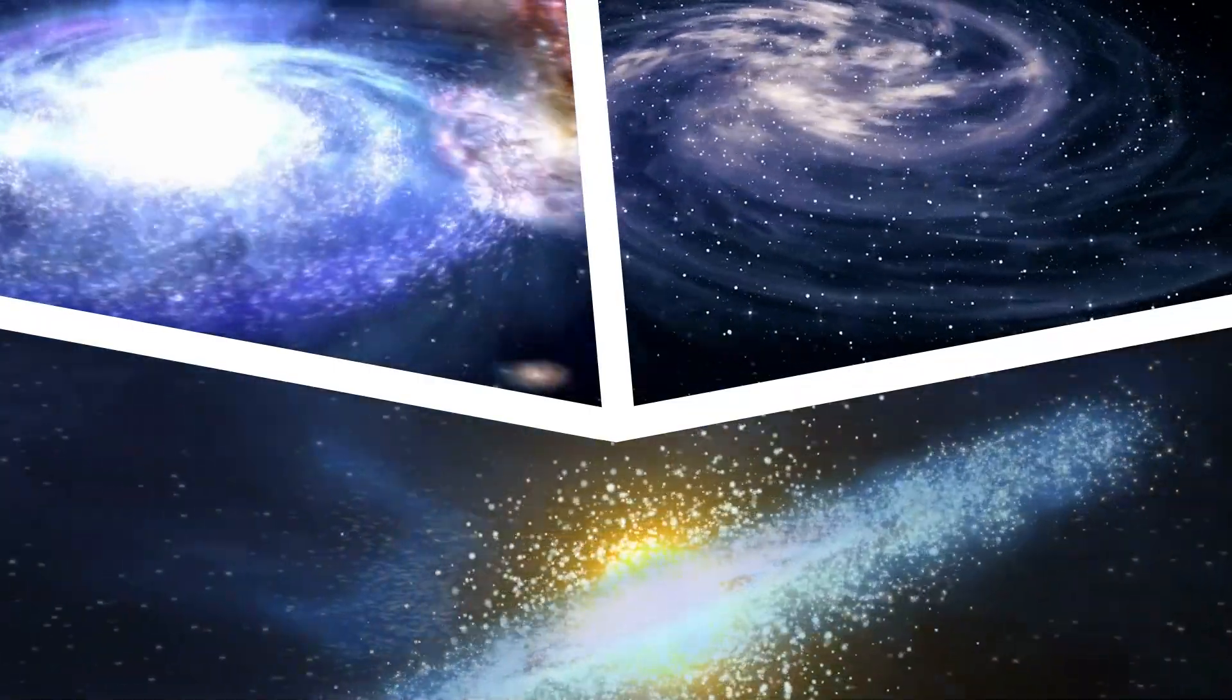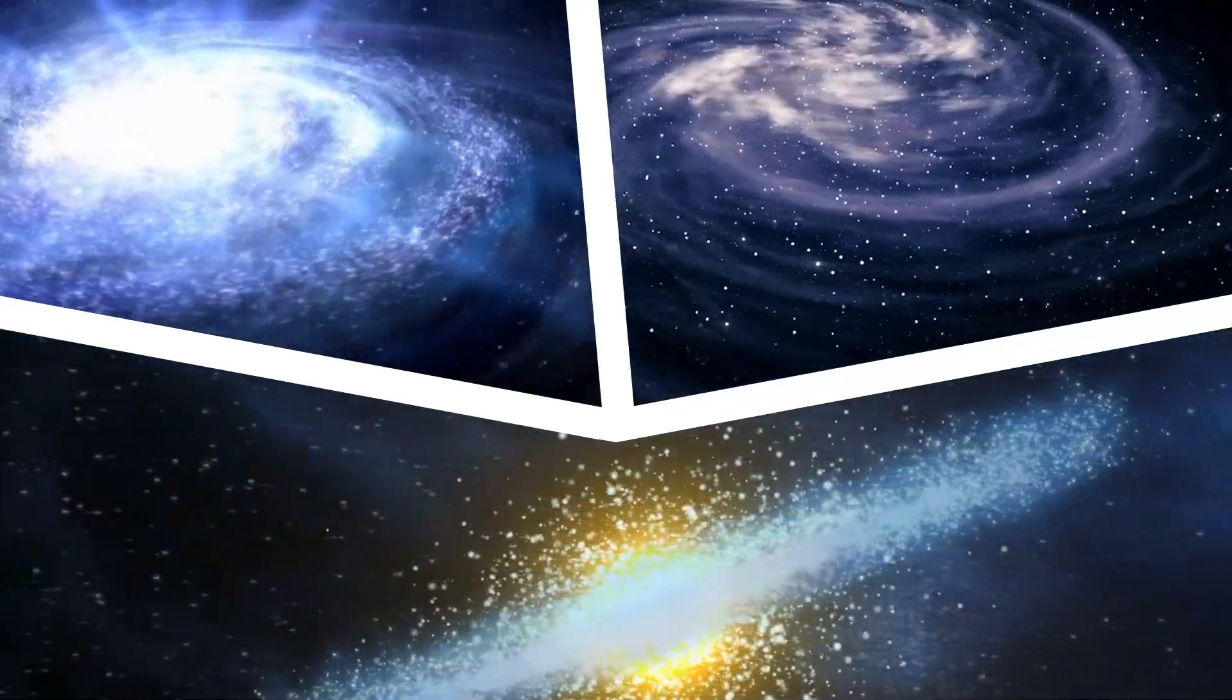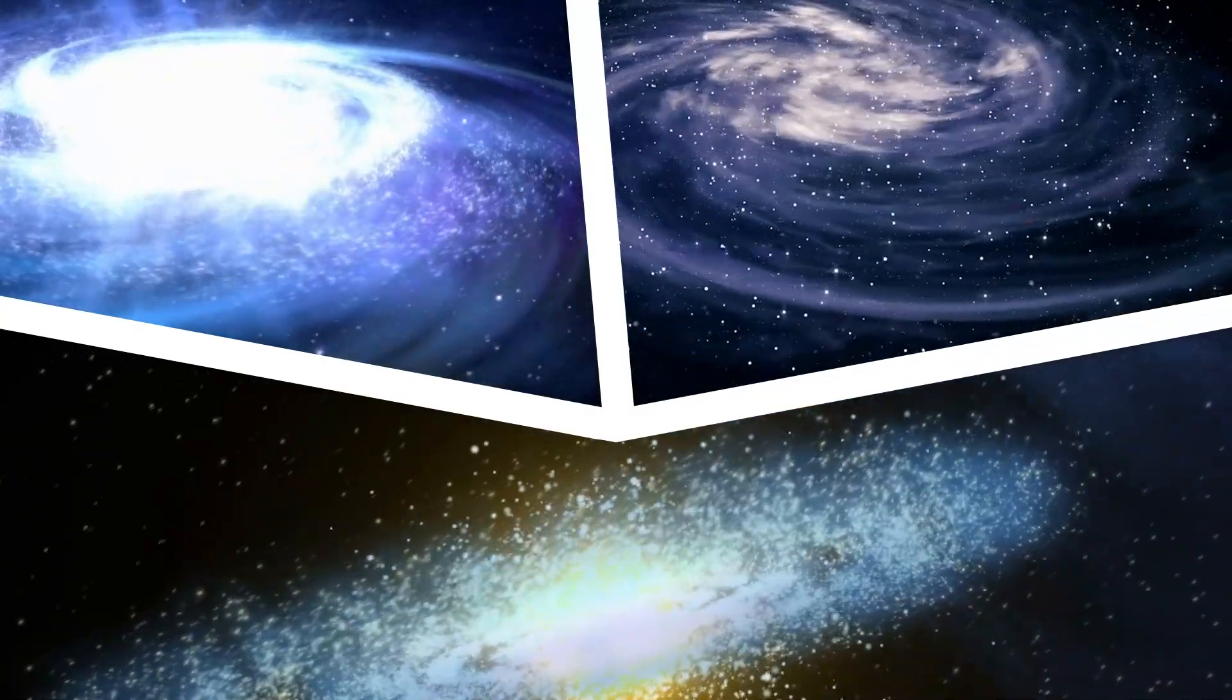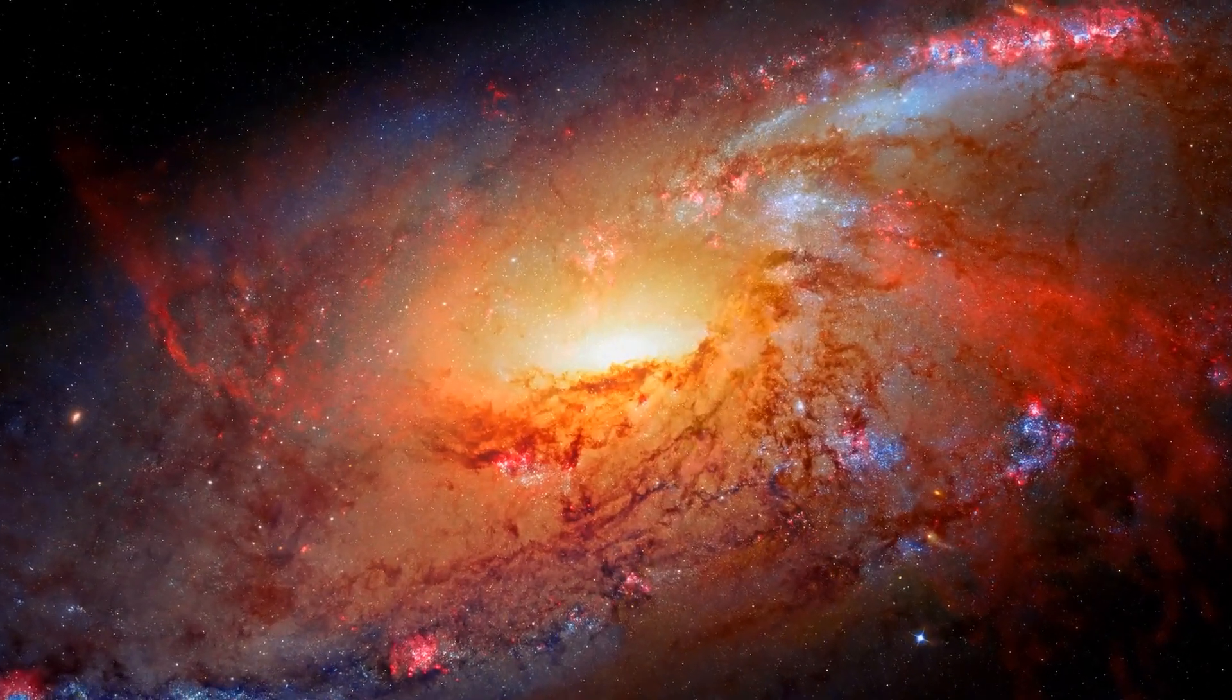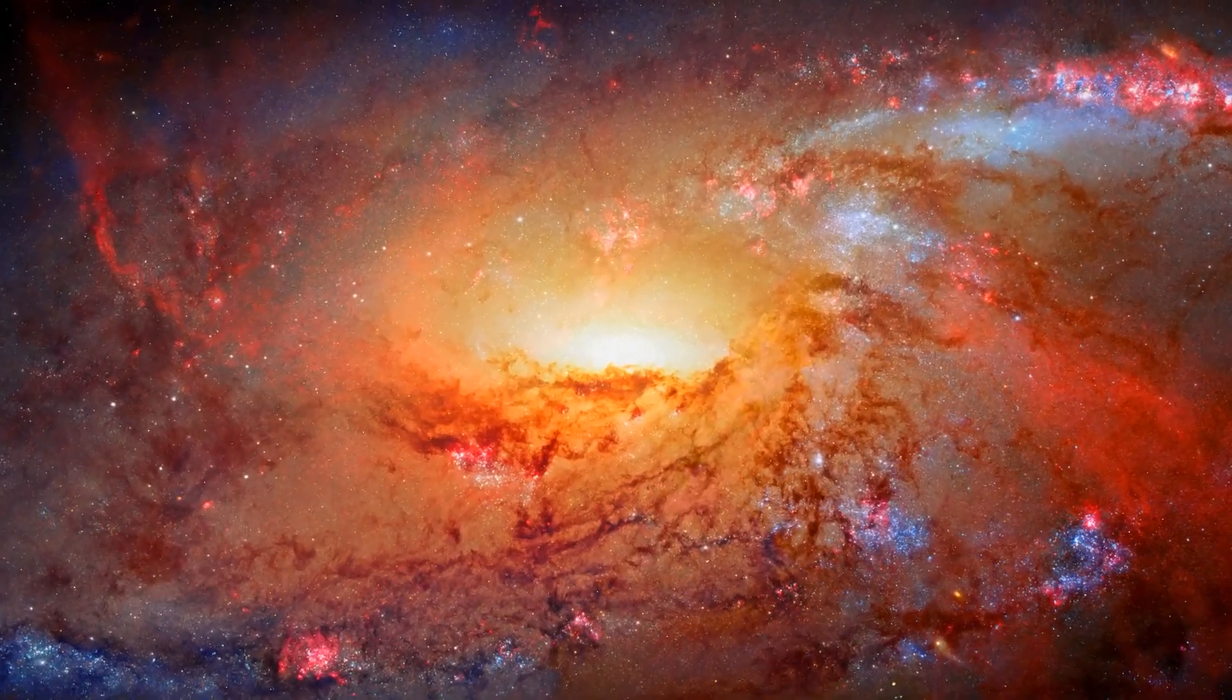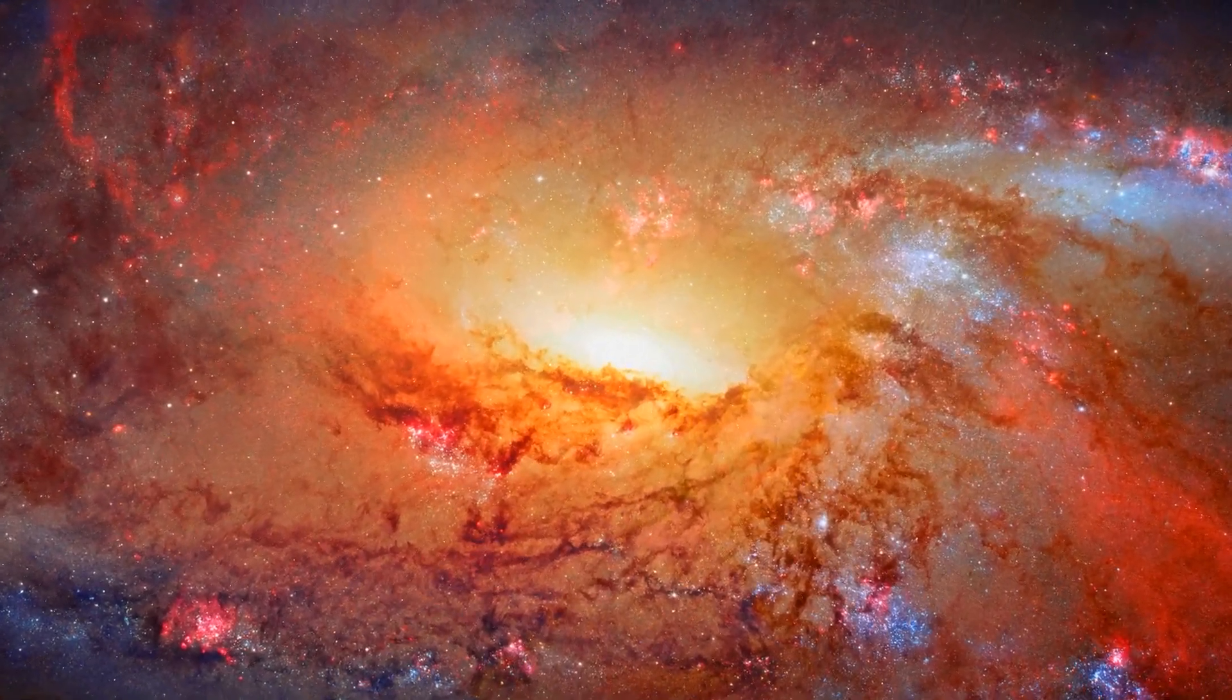As these galaxies collided and merged together, their stars, gas, and dust were compressed and heated, leading to the formation of new stars and the growth of the merged galaxy. Over time, as more galaxies merged with Elkinese, it grew to become one of the largest and most massive galaxies in the universe.